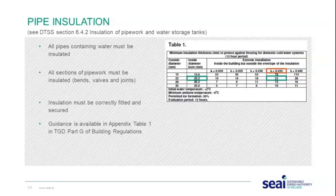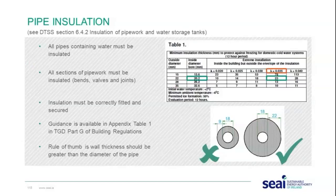As a practical example: for a 20.2 millimetre diameter pipe with pipe insulation conductivity of 0.035, you would need 23 millimetres of insulation. A useful rule of thumb is that the wall thickness of the pipe insulation should be greater than the diameter of the pipe. For example, with an 18 millimetre pipe, 9 millimetre insulation is insufficient — you should use 22 millimetre insulation. The key message is to use thicker insulation where the wall thickness is greater than the pipe diameter.